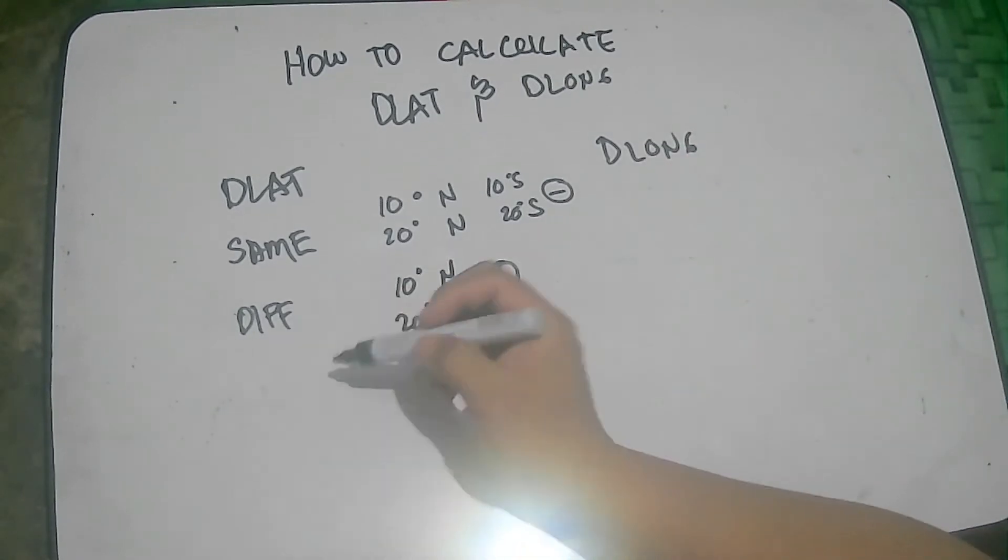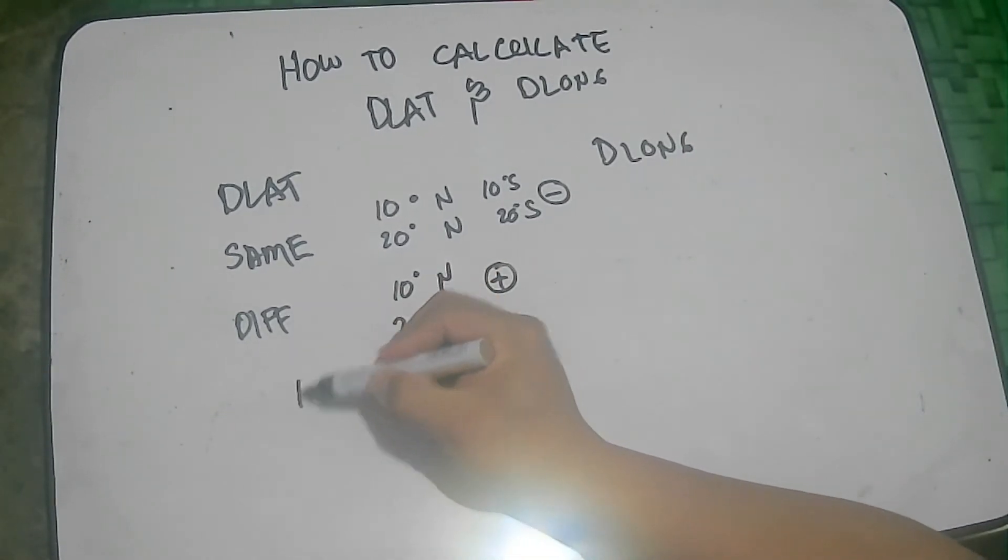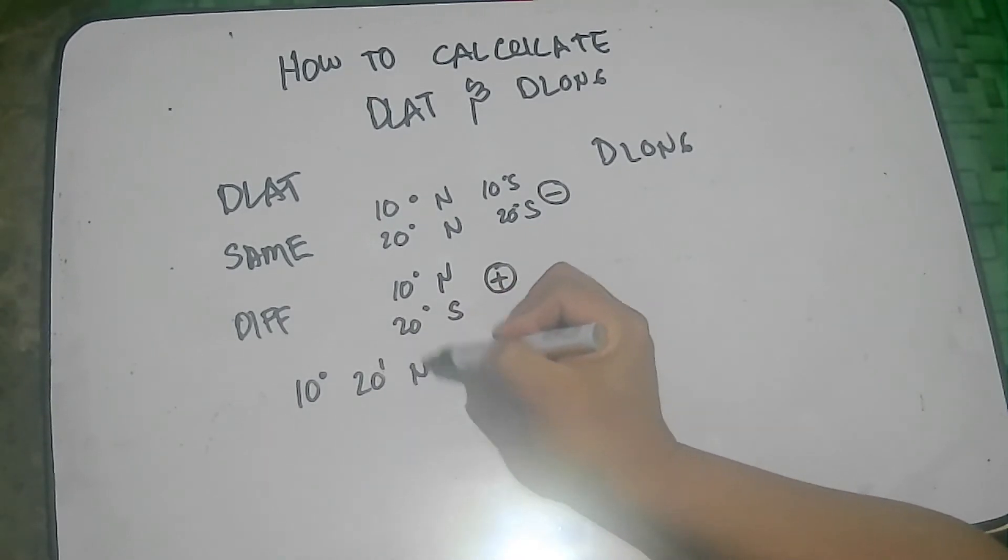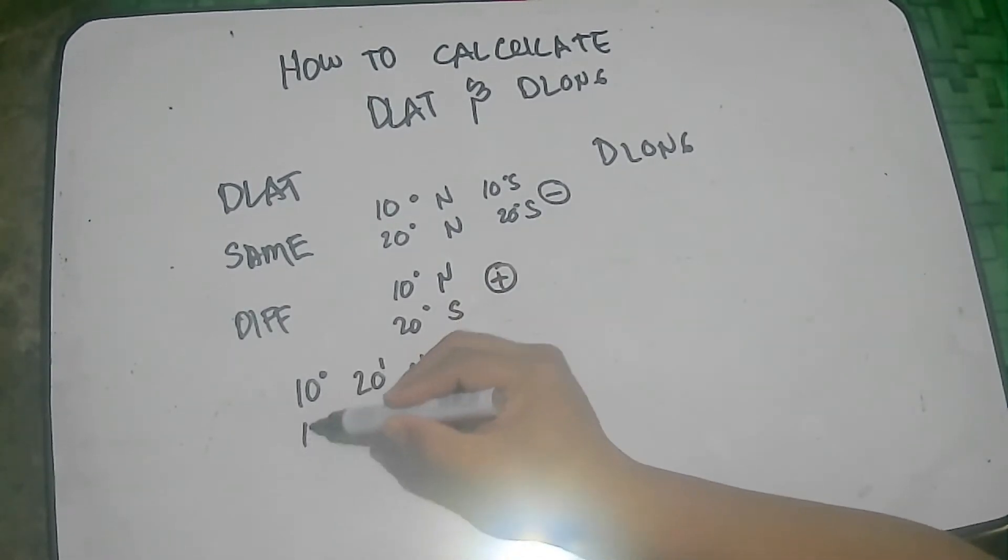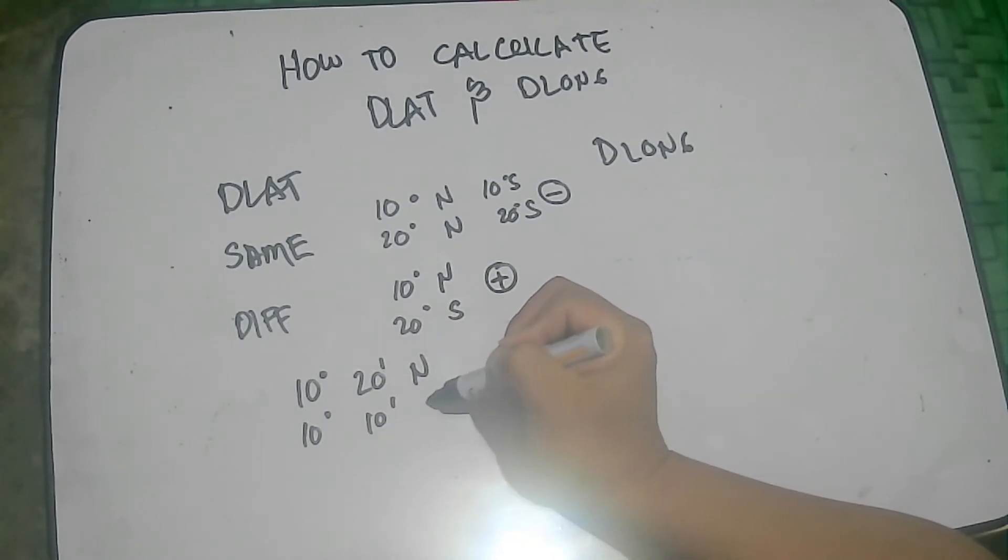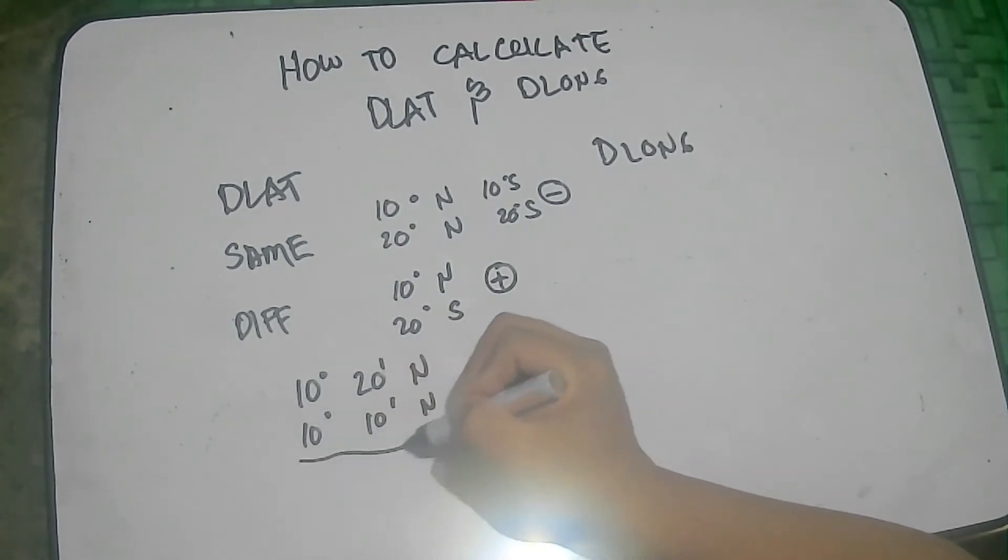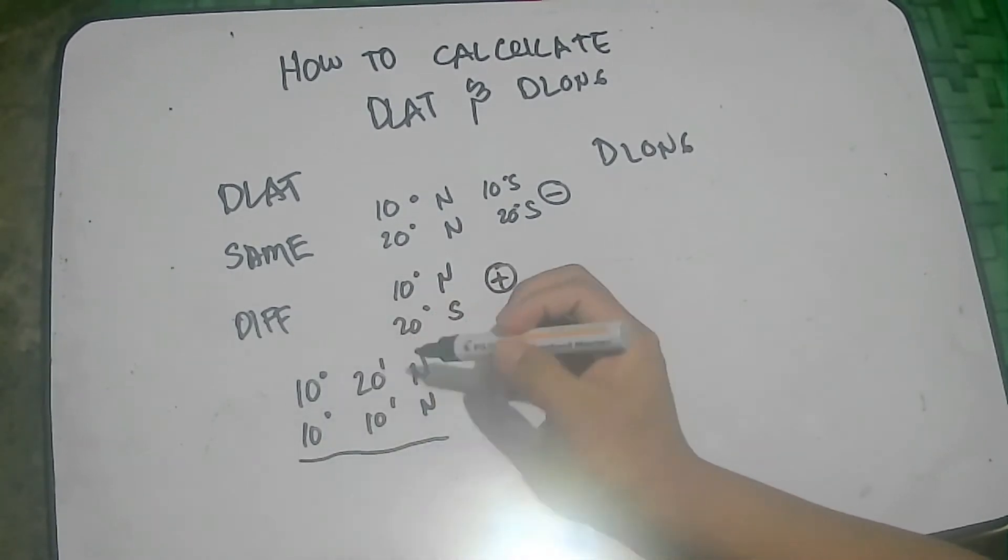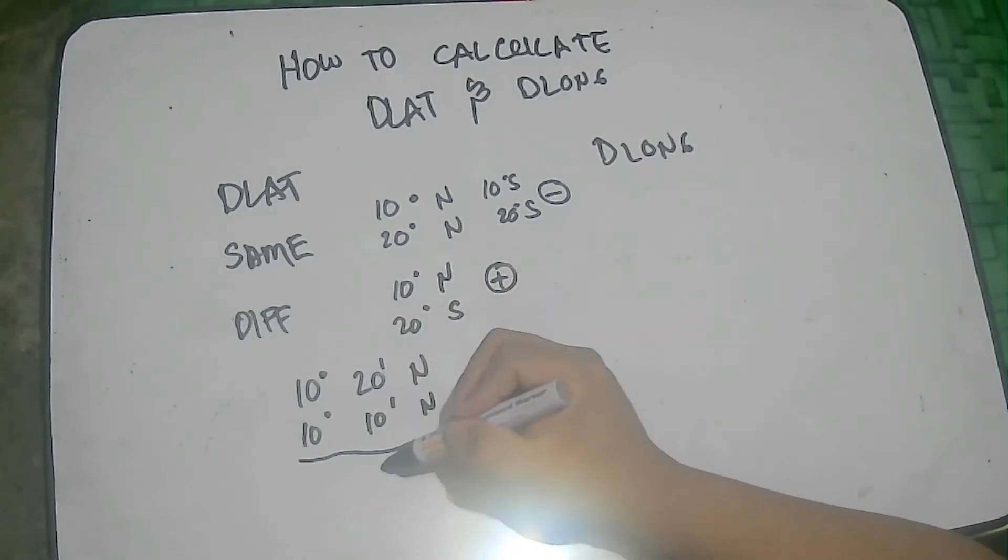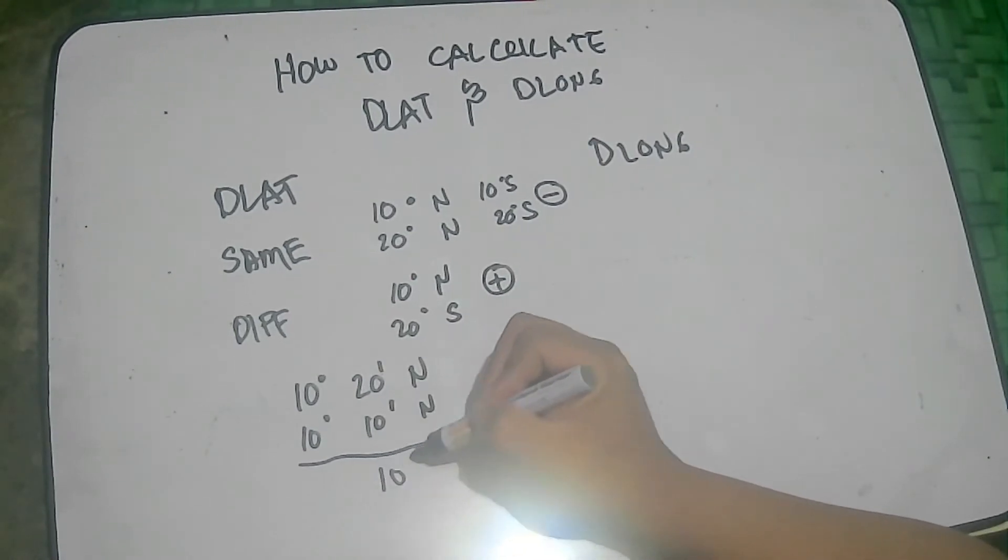So, for example, we have here 10 degrees 20 minutes north and 10 degrees 10 minutes north. So, what would be the Dilat? So, we subtract. So, the difference of latitude will be 10 minutes.